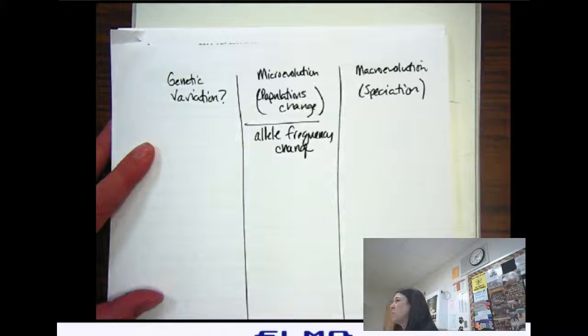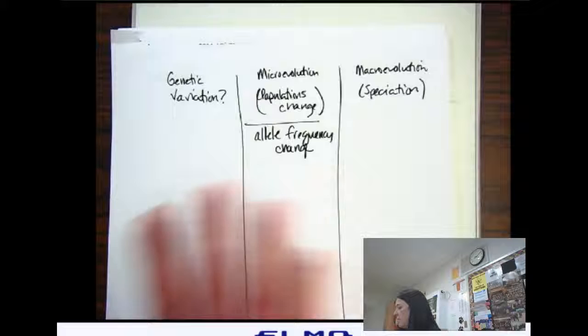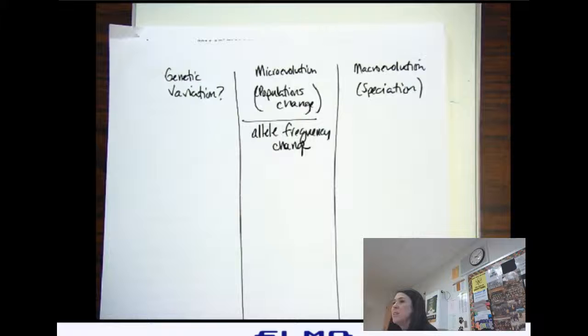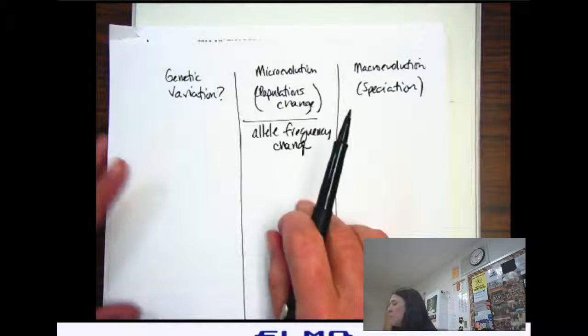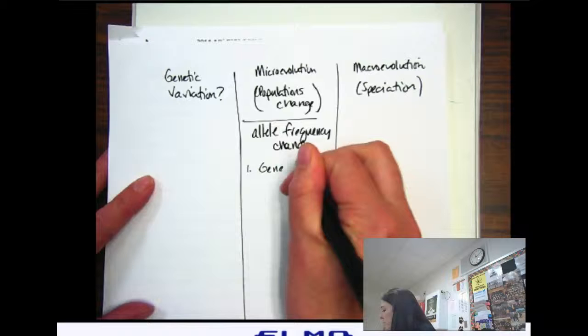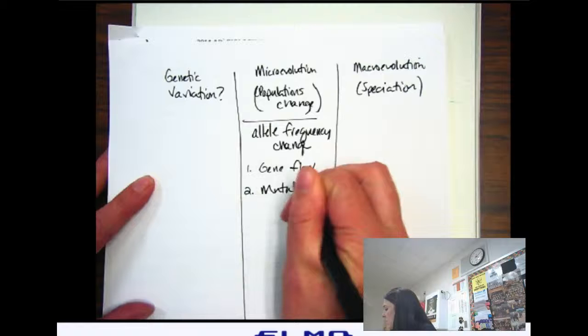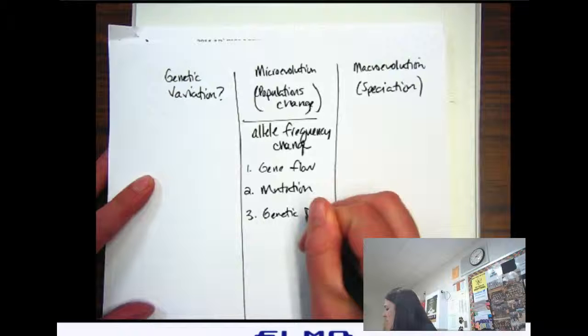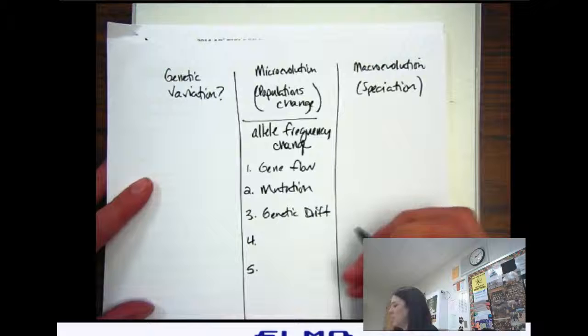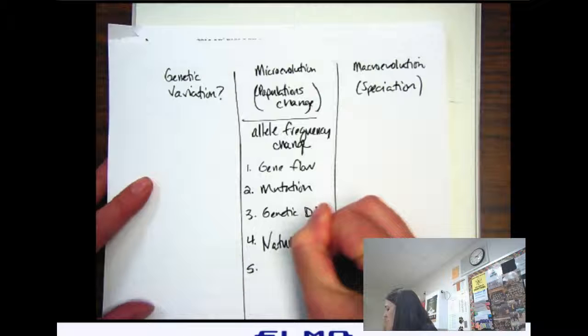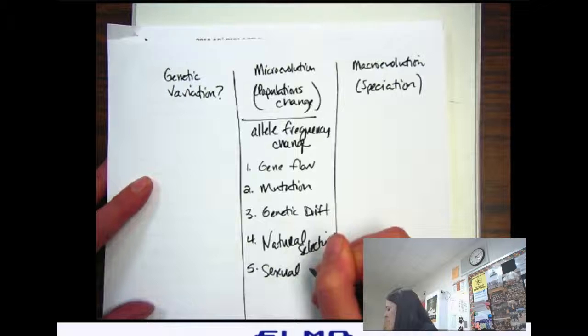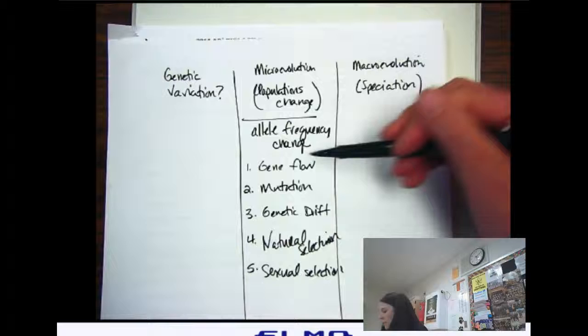Or we'll see phenotypic genetic phenotypic frequencies change too. So there's like five fingers of evolution, five different ways that populations can change. What can cause allele frequencies to change? Gene flow, mutation, genetic drift, natural selection. Okay, so these are five different ways and they all change allele frequencies in a population.